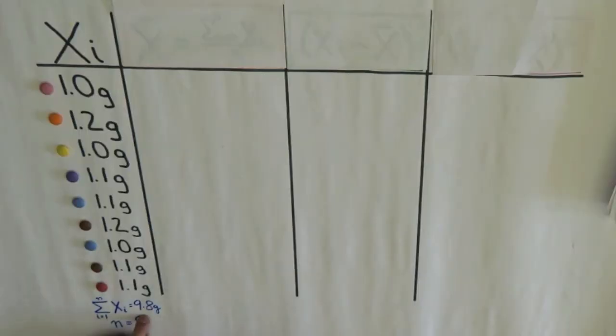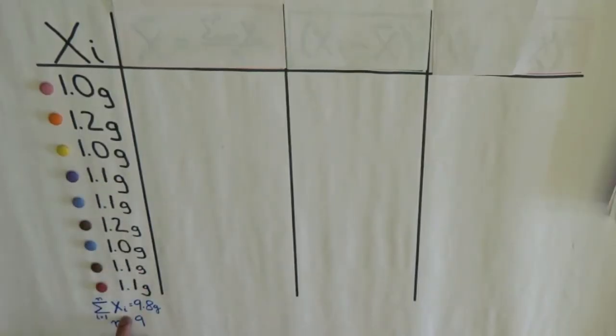Now that we have our formula, we are now ready to calculate the sample variance of the smarties weight. Here, I have already added these numbers and found out the total weight of smarties. And the number of smarties is 9.